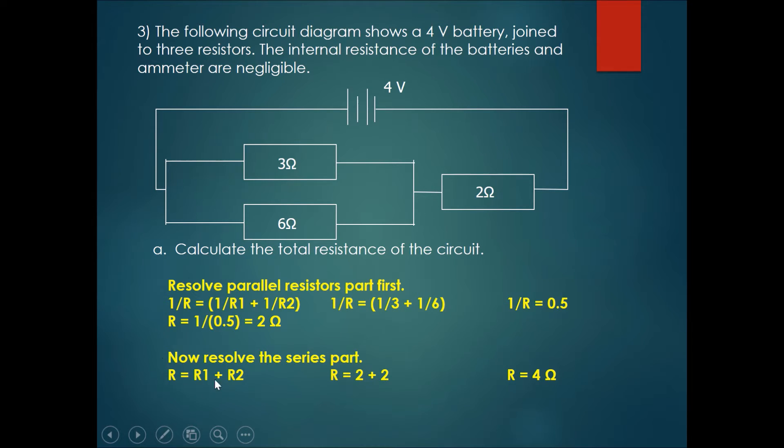R is equals to R1 plus R2. 2 plus 2 gives you a final total resistance of 4 ohms.